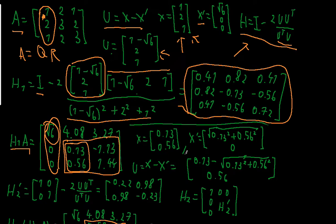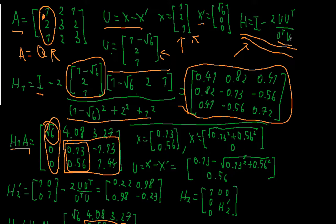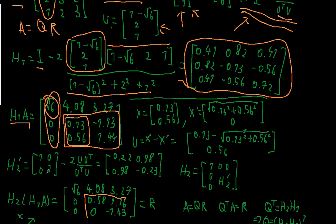My vector x prime is, again, the norm or the length of this vector x: the square root of 0.13 squared plus 0.56 squared. And u can again be obtained by x minus x prime. So u is: 0.13 minus the square root of (0.13 squared plus 0.56 squared), and the second component is 0.56. Now I have my vector u and I can plug it again into my formula. But this time it's a 2x2 matrix, because we are considering the submatrix.